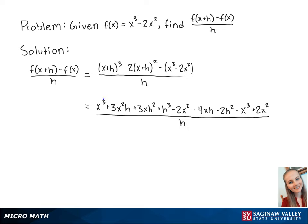If we combine like terms, we can see the x cubed and negative x cubed cancel out as well as negative 2x squared and 2x squared.